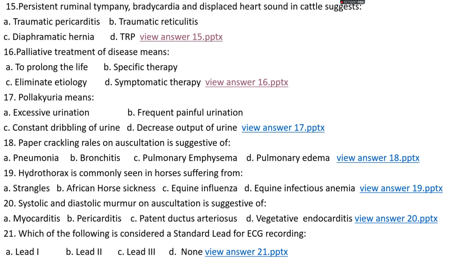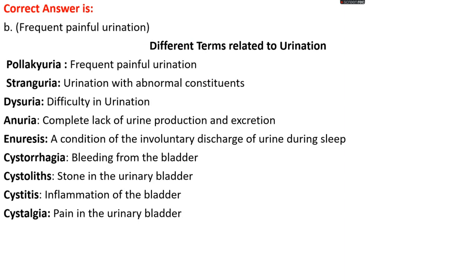Question number 17. Pollakiuria means: options A, excessive urination; options B, frequent painful urination; option C, constant dribbling of urine; options D, decreased output of urine. The right answer is option B, frequent painful urination. Related urination terms: pollakiuria — frequent painful urination; stranguria — urination with abnormal constituents; dysuria — difficulty in urination; anuria — complete absence of urine production; enuresis — involuntary discharge of urine during sleep.